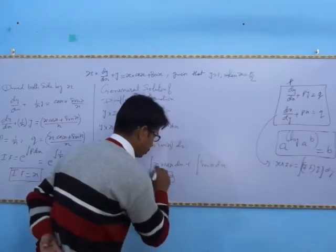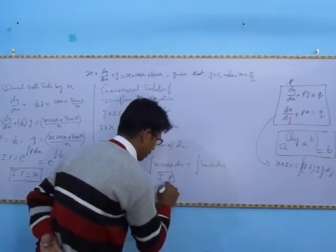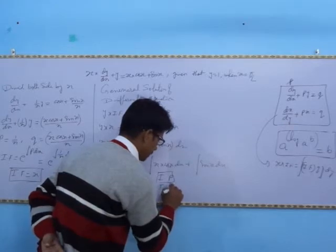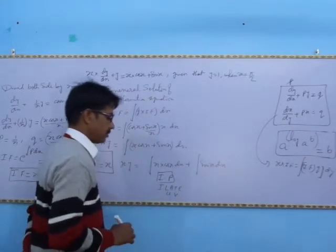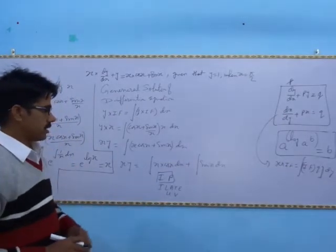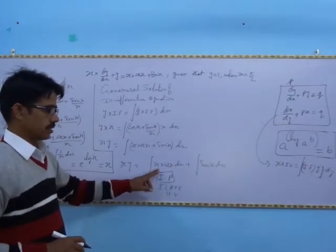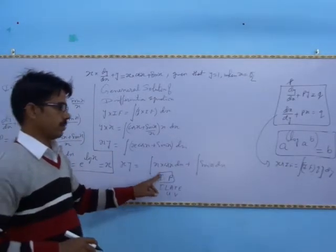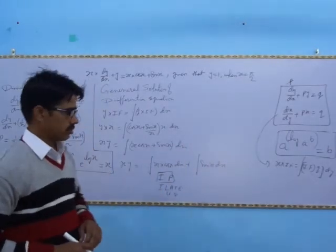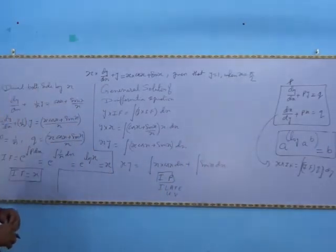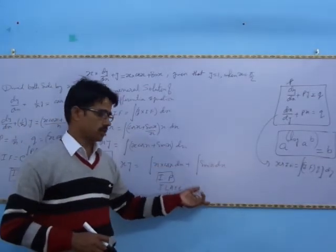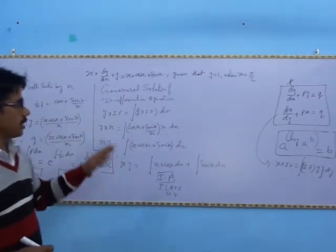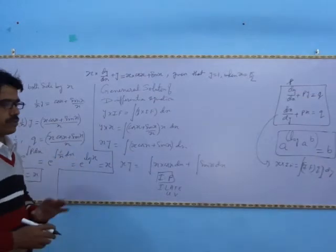Integration by parts uses the ILATE properties: identify u and dv, then solve. The integral of x·cos x uses integration by parts, and sin x integration gives minus cos x. So we apply the formula and sin x integrates to minus cos x, plus constant C.